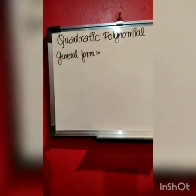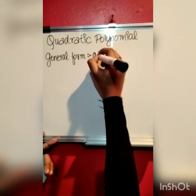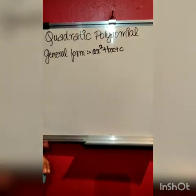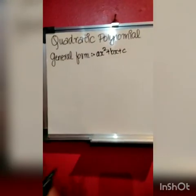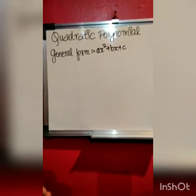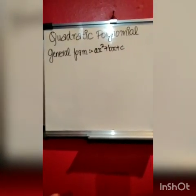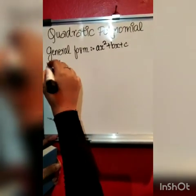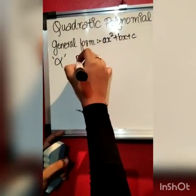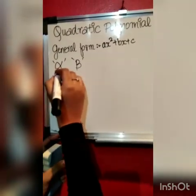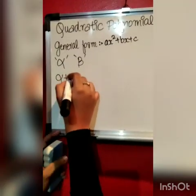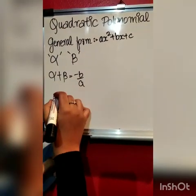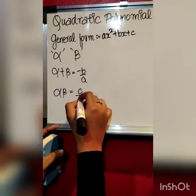What is the general form of quadratic polynomial? The general form of quadratic polynomial is ax² plus bx plus c. Let's take alpha as one zero and beta as another zero. So, the sum of alpha and beta, we will get minus b by a. And the product of alpha and beta, that is c by a.